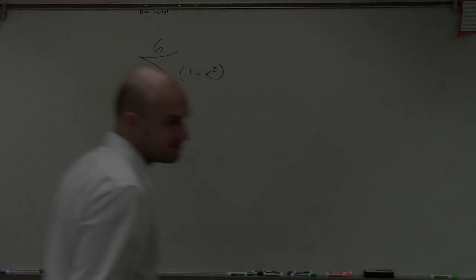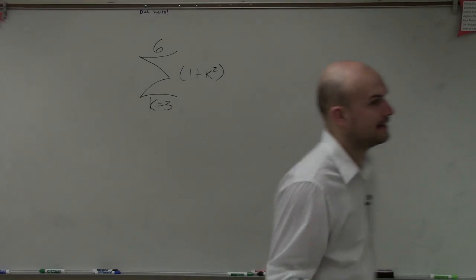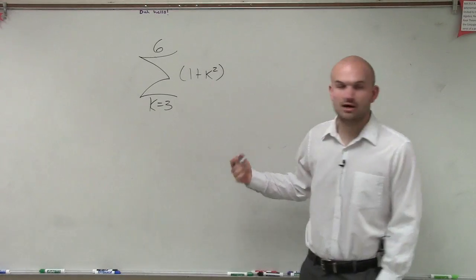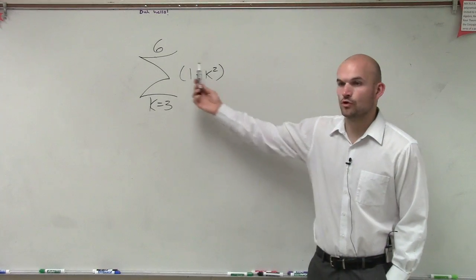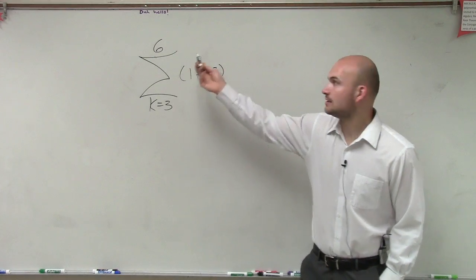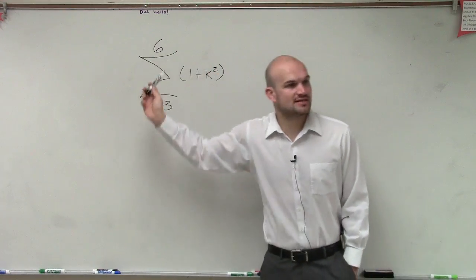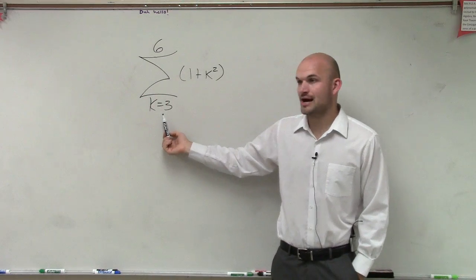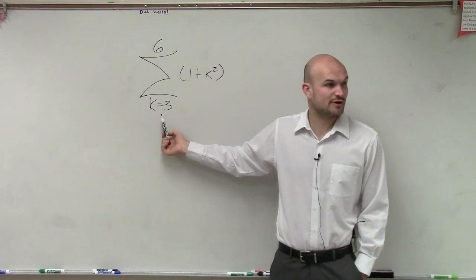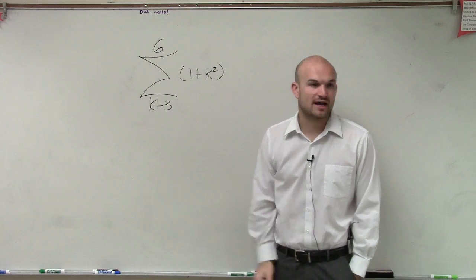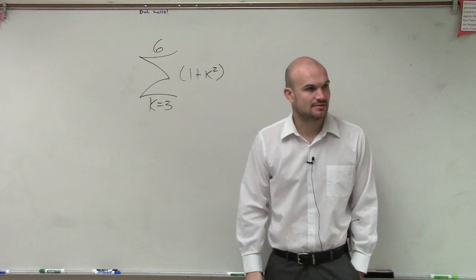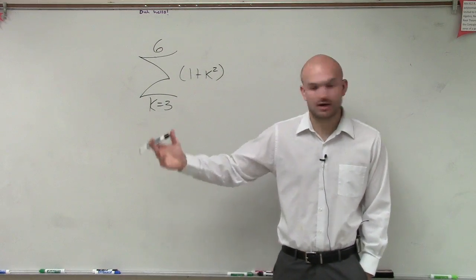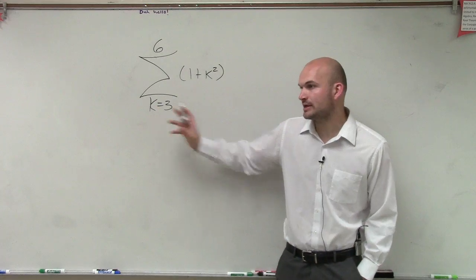I'm not using i's, n's, or x's — I'm just using k's. All this is saying is: here's my rule. The sigma is going to tell us we're going to take the sum starting at my first value of 3, ending at my value of 6. So in this case, I'm not going to start at 1. I'm going to start at 3.